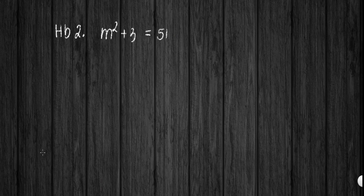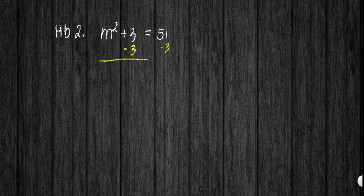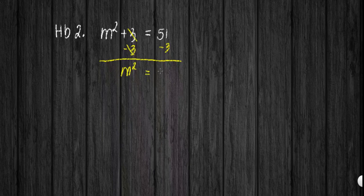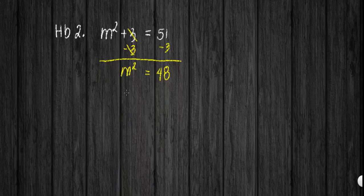For example number 2, we have m squared plus 3 equals 51. The first thing I need to do is eliminate the positive 3. To eliminate that, I'll subtract both sides by 3. What remains on the left side is m squared, since it cancels out. Then 51 minus 3 is 48. Since our a here is 48 and 48 is greater than 0, we have m is equal to positive or negative square root of 48.